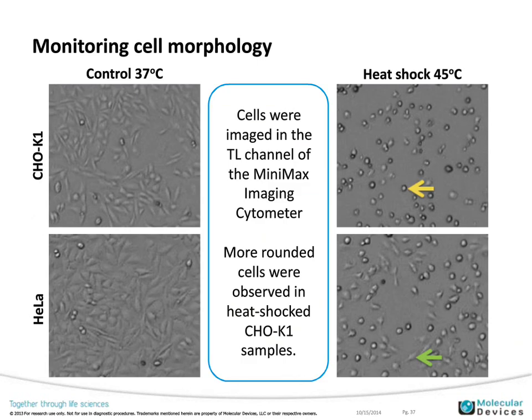Looking at cell morphology immediately after the 90-minute heat shock, CHO K1 cells are on the top row and GELA cells on the bottom, with control cells grown at 37°C on the left and heat shock cells at 45°C on the right. Images were taken in the transmitted light channel of the MiniMax cytometer. A higher percentage of CHO K1 cells are rounded in response to heat shock — indicated by a yellow arrow — which is indicative of apoptosis. In the GELA population, a green arrow points to a cell still showing flattened, normal morphology — there is some rounding, but much more in the CHO cells.